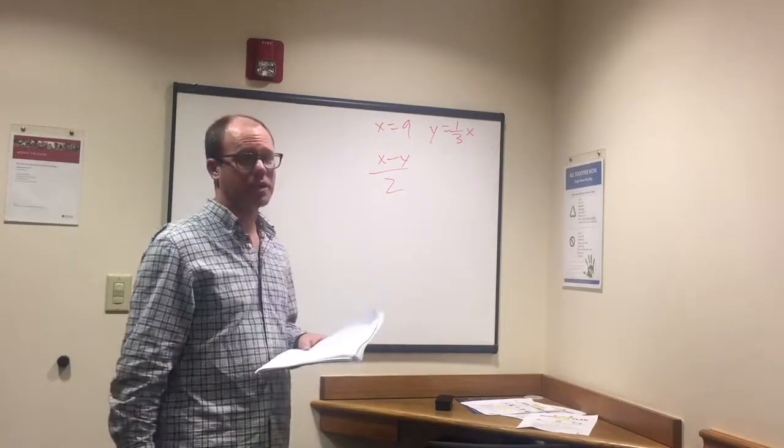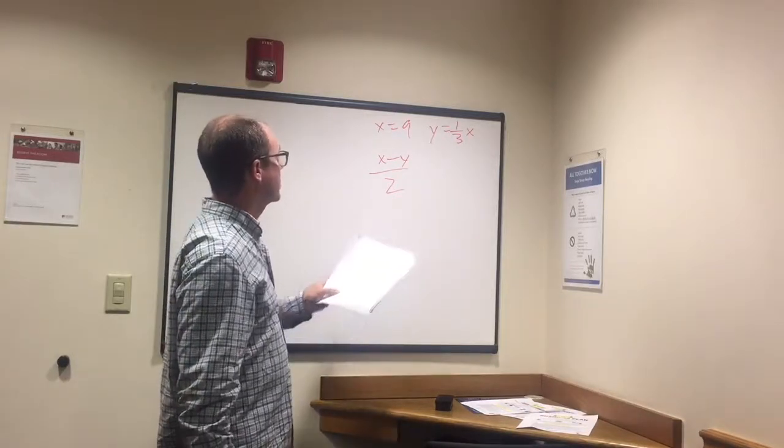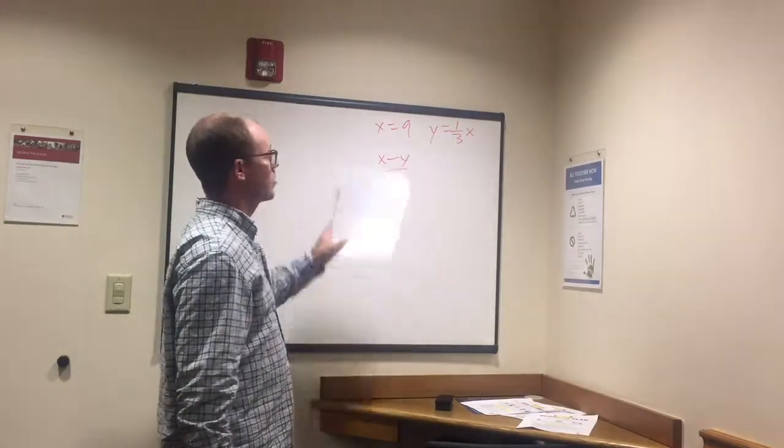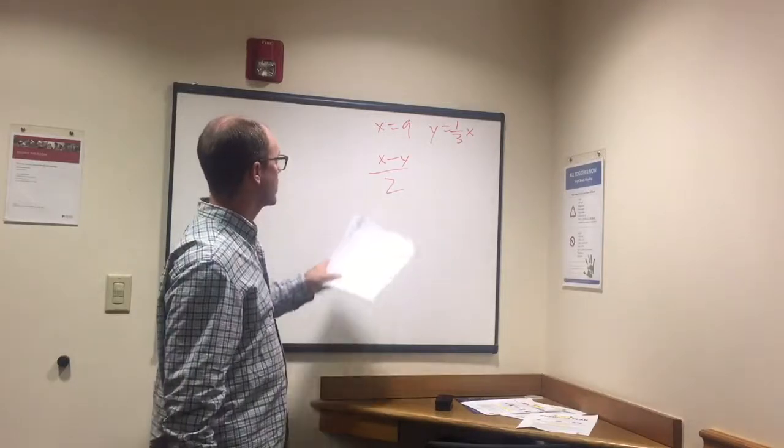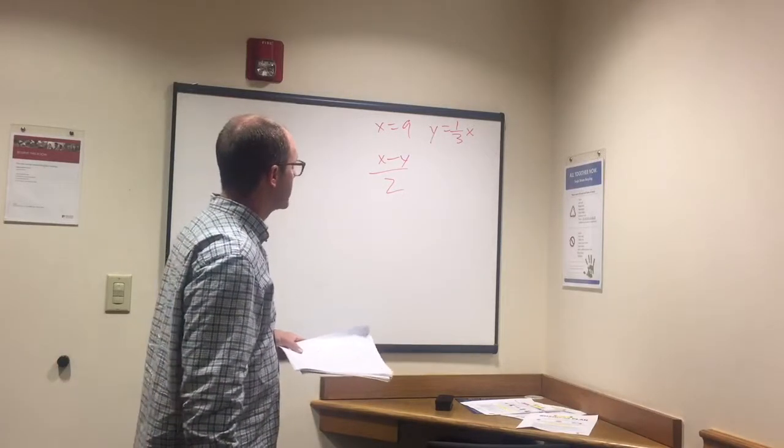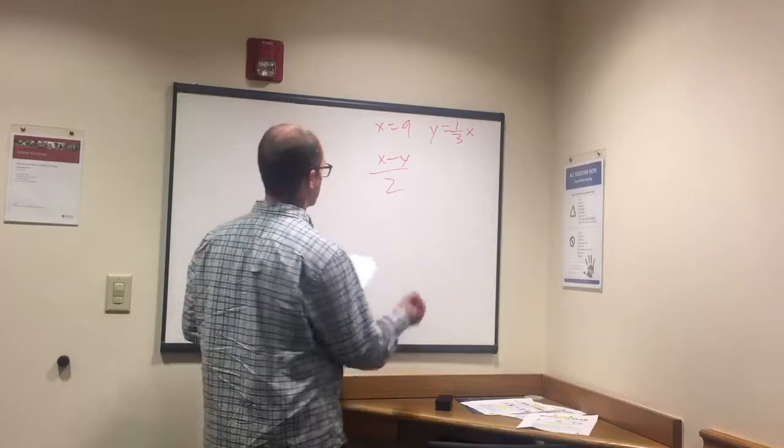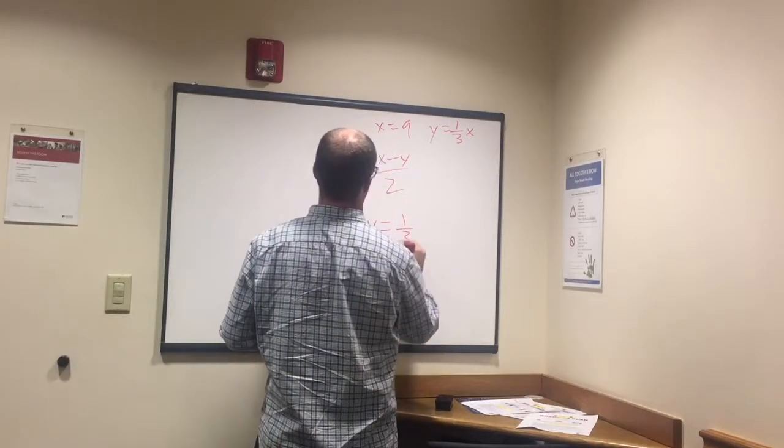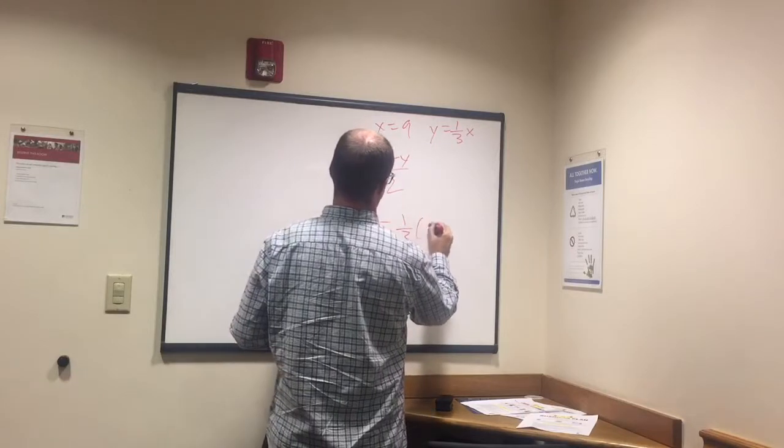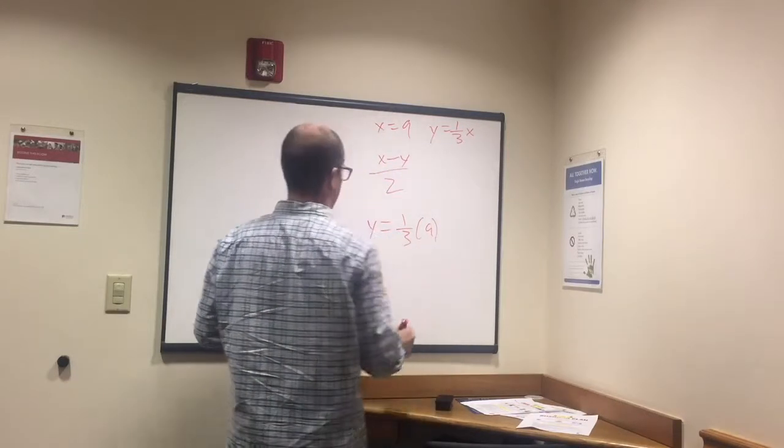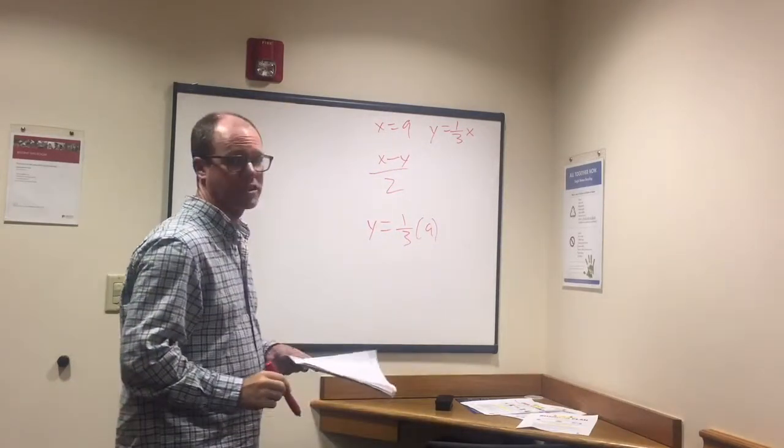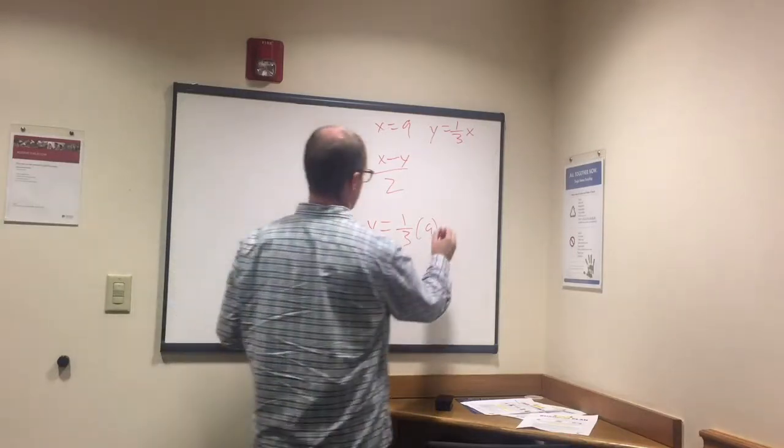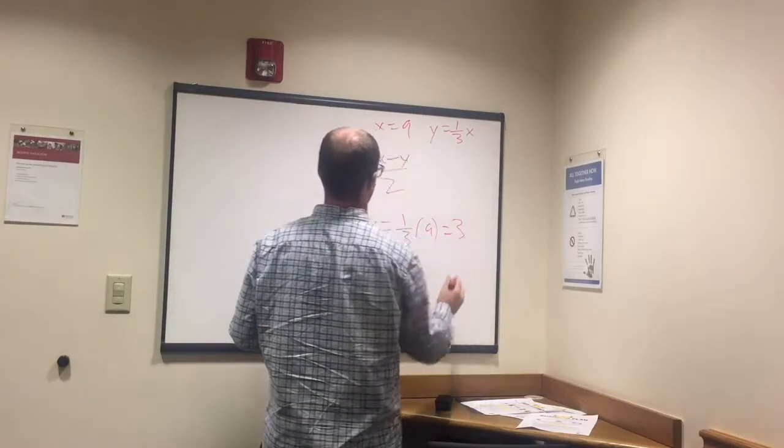How do we do this? So this looks complicated, doesn't it? So the big thing is we need to figure out what y equals before we worry about x minus y divided by 2. So it's pretty simple, we just have to plug that in. So y equals 1 third x, y equals 1 third times x, which is 9, which equals 9 over 3. 9 over 3 equals 3.